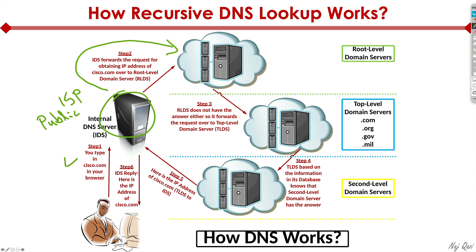Assuming the public DNS server doesn't have that information either, it goes to a root level domain server and asks about cisco.com. There are only a handful of root level domain servers around the globe — some big universities actually maintain them. The root level domain server says it doesn't know the answer, but it does know the top level domain server that may know.